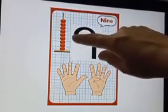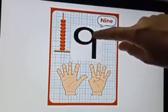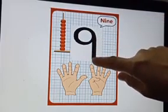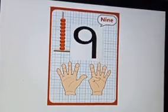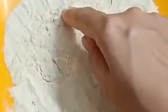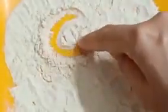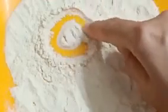Now learn how to write number 9. Start from here, make a curve and standing line. Children, let's learn how to write number 9 in the flat plate. Make a curve, then standing line. This is number 9.